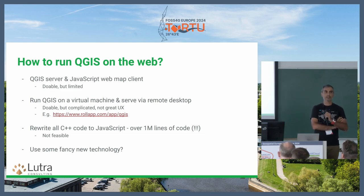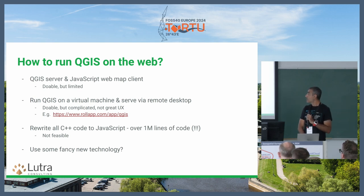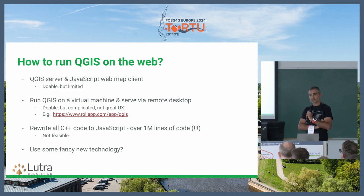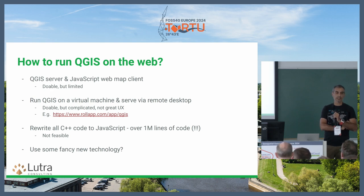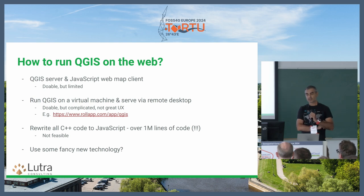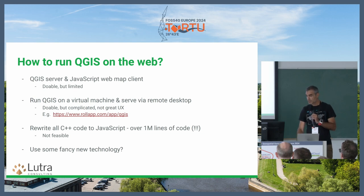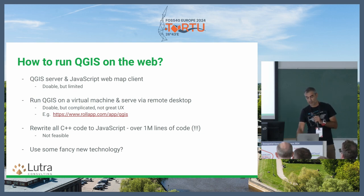If you change symbology and you have a large cache, you need to redo the caching. There will also be lots of limitations — you just see the image, you can't do anything with it. Maybe some identification, legend, and that's it. If you ever dream of editing the data it becomes a nightmare. So it's just a screenshot of your QGIS in the web browser.